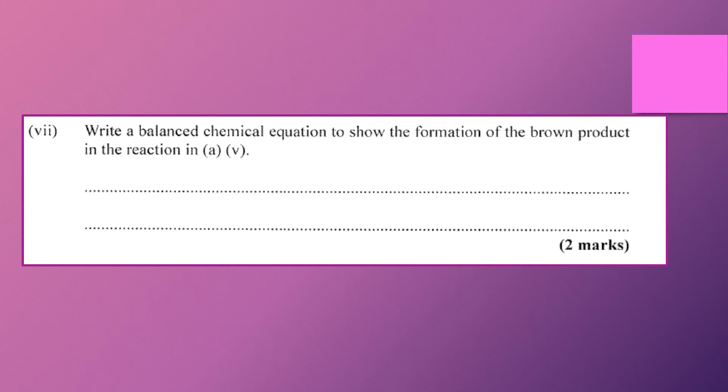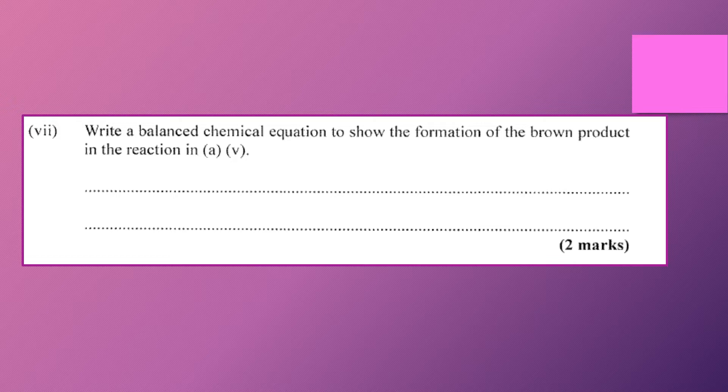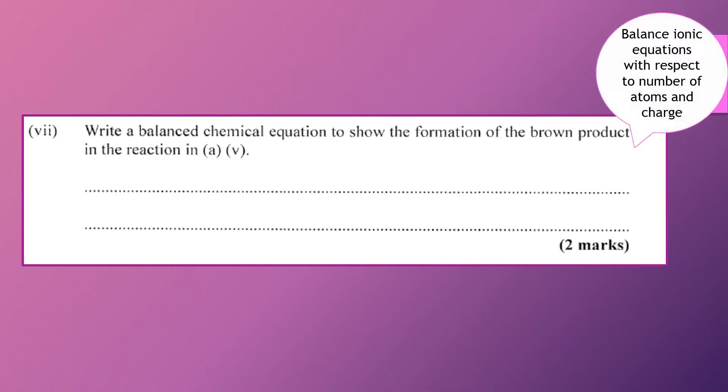So now we're asked to write a balanced chemical equation to show the formation of the brown product in the reaction that was just mentioned. So that reaction told us that a solution A was added to the potassium iodide, and that changed from colorless to brown. So we can note why it is that there was a change from colorless to brown.